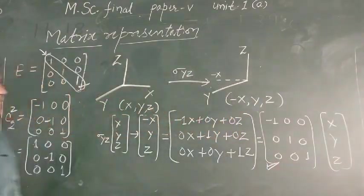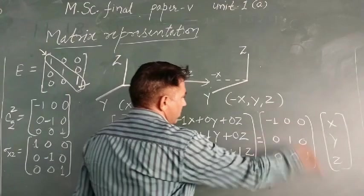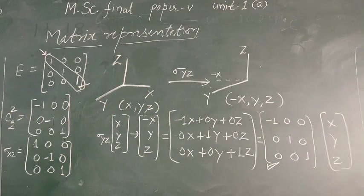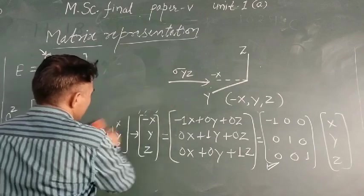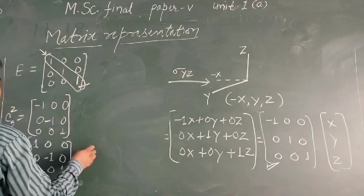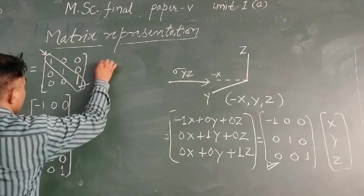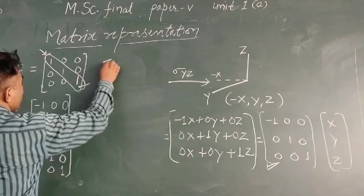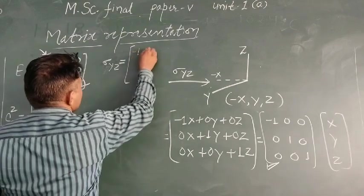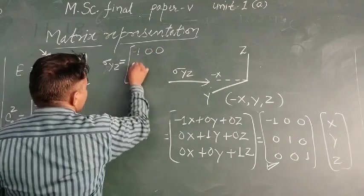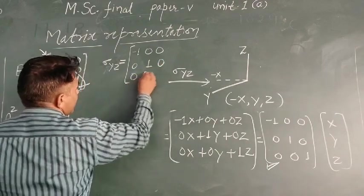So the matrix for σ(yz) has come. Its character/trace values are: −1, 1, 1. The matrix is [−1, 0, 0 / 0, 1, 0 / 0, 0, 1]. This is the matrix for σ(yz).